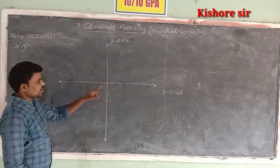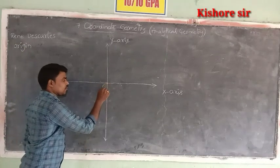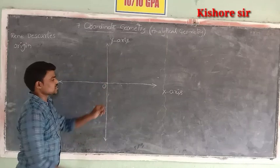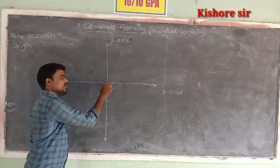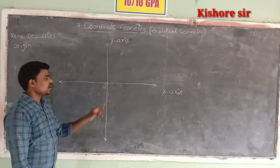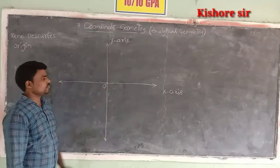That meeting point is called the origin. Origin is denoted by capital O. Two axes meet at a point called origin, and origin is denoted by O.